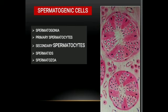Secondary spermatocytes are formed by the division of primary spermatocytes. Each secondary spermatocyte has a haploid number of chromosomes and is smaller than the primary spermatocyte. These secondary spermatocytes divide to form two spermatids each.